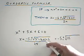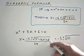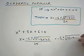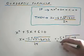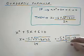Right, 4 times 1 is 4 times 6 is 24, so it will be minus 24. All over 2 times 1 which is just 2.